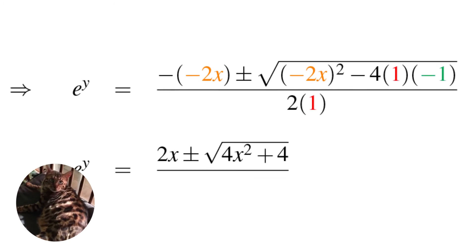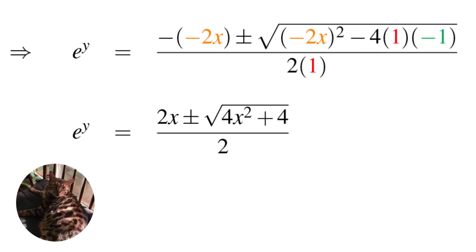e to the y equals positive 2x plus or minus the quantity 4x squared plus 4 all divided by 2.